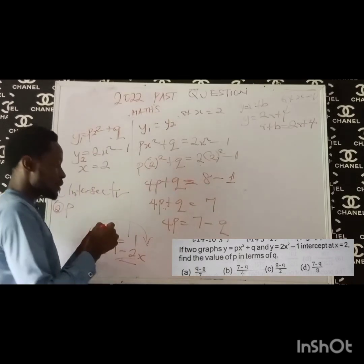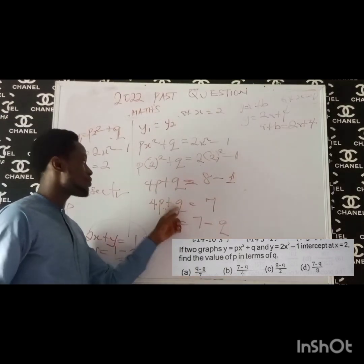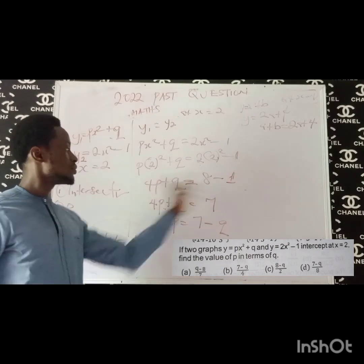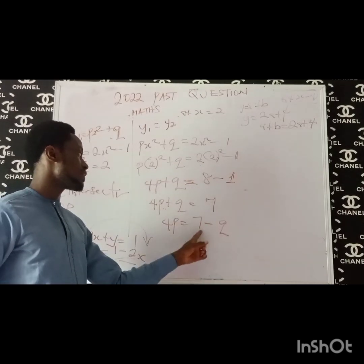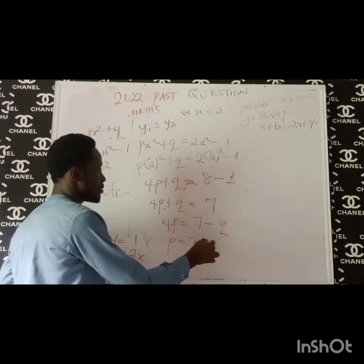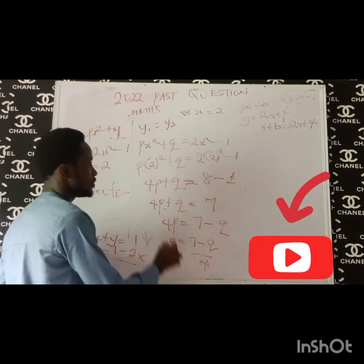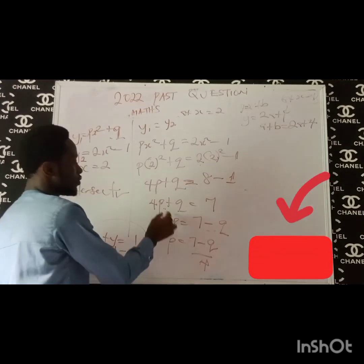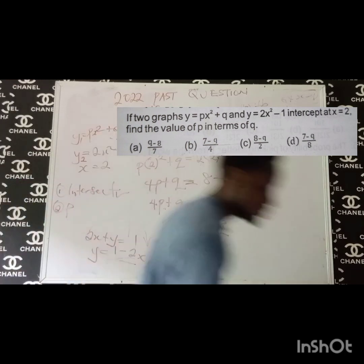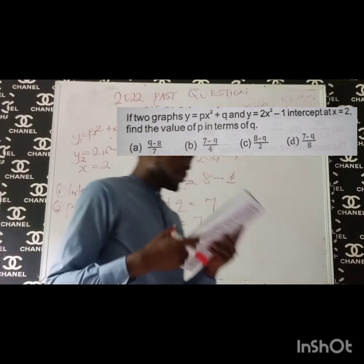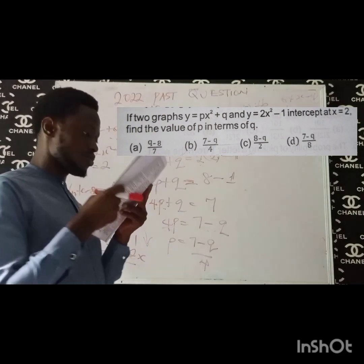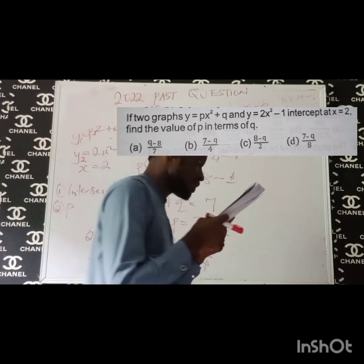Now find p in terms of q, which means make p the subject of the formula. p should be on the left-hand side and q on the right. From 4p plus q equals 7, I move q over: 4p equals 7 minus q. Dividing both sides by 4 gives p equals 7 minus q divided by 4. That is the correct answer, and that will be option B.